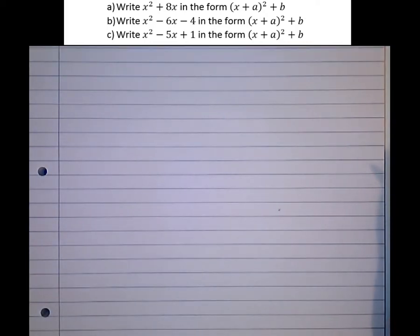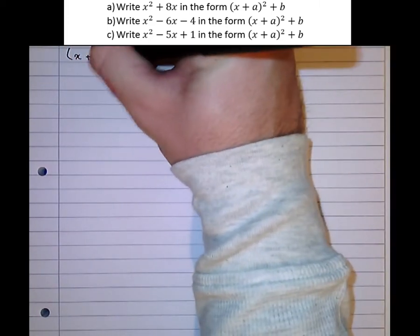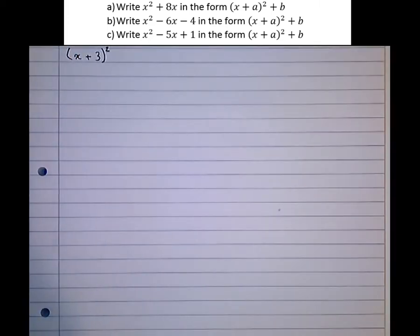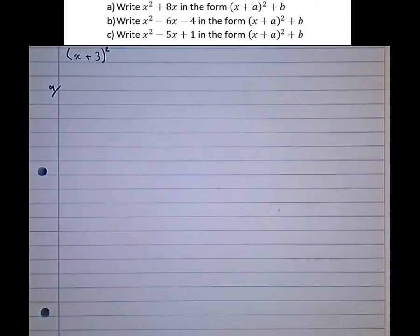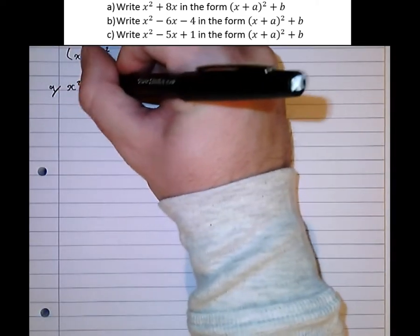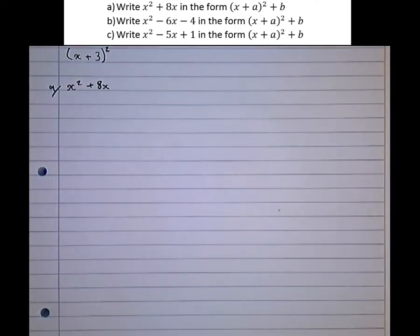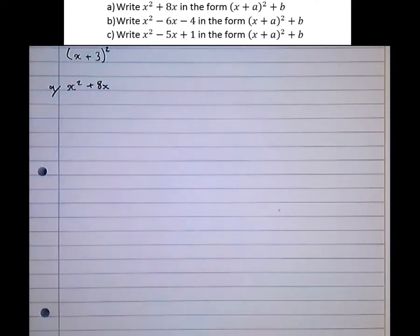We're now going to look at how to complete the square for a quadratic. Now a complete square is a bracket like this one here with a square attached. So when we're asked to complete the square for something like x² + 8x, what it actually means is rewrite this in a form that has a square bracket a bit like that one there.